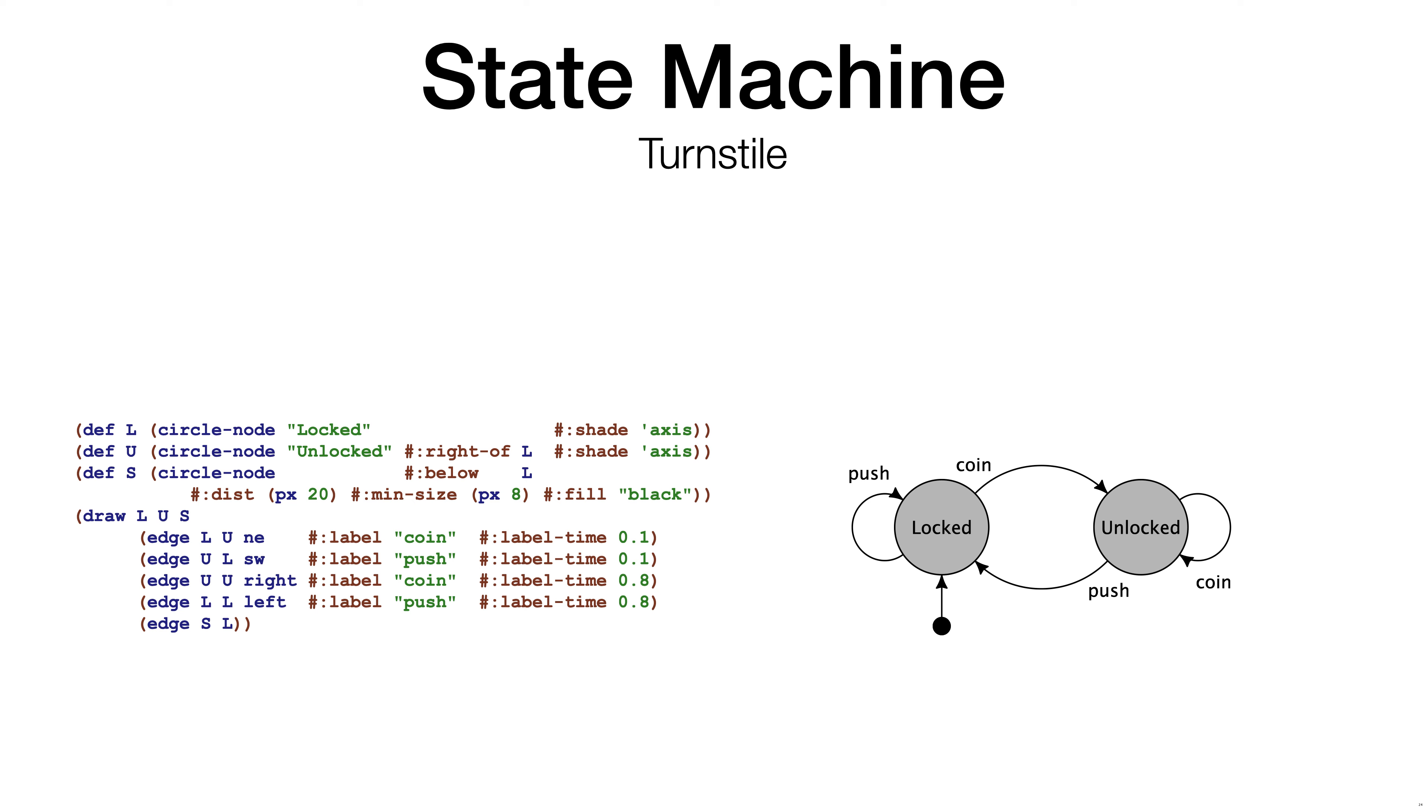This example shows how to draw a simple state machine. The state machine models how a turnstile works. The black circle indicates where to start, and the turnstile starts in the locked state. If you put in a coin, the state changes to unlocked, and if you push through the turnstile, we've returned to a locked state.